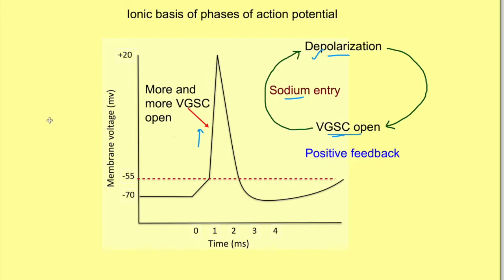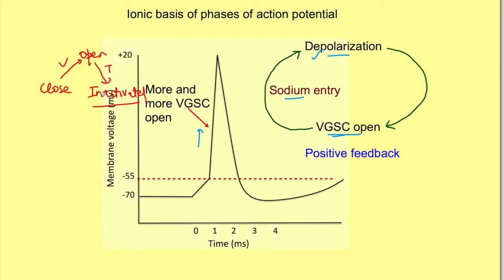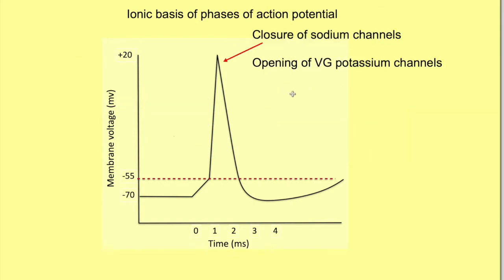These sodium channels close — or rather inactivate — in a time-bound manner. From the closed state they have opened due to the change in voltage, but very rapidly they become inactivated. So as soon as they open, they start getting inactivated as well. This limits the entry of sodium ions into the cell, and this is one reason why the potential change is limited to only about +20 millivolts.